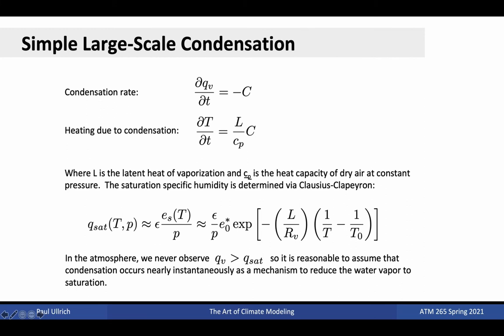In our simple parametrization, we will simply assume liquid water will instantaneously fall out of the atmosphere and deposit on the surface. We will assume that this process takes place at constant pressure in order to preserve conservation of mass in a vertical pressure coordinate model, even though this is not really a constant pressure process in reality. If we define the rate of loss of water vapor as capital C, then the amount of heating due to condensation is equal to L over Cp times C. Here L is the latent heat of vaporization of water, a constant, and Cp is the specific heat capacity of dry air at constant pressure. These coefficients quantify the amount of heat released when the water condenses and how much of a temperature change that induces in the surrounding air.